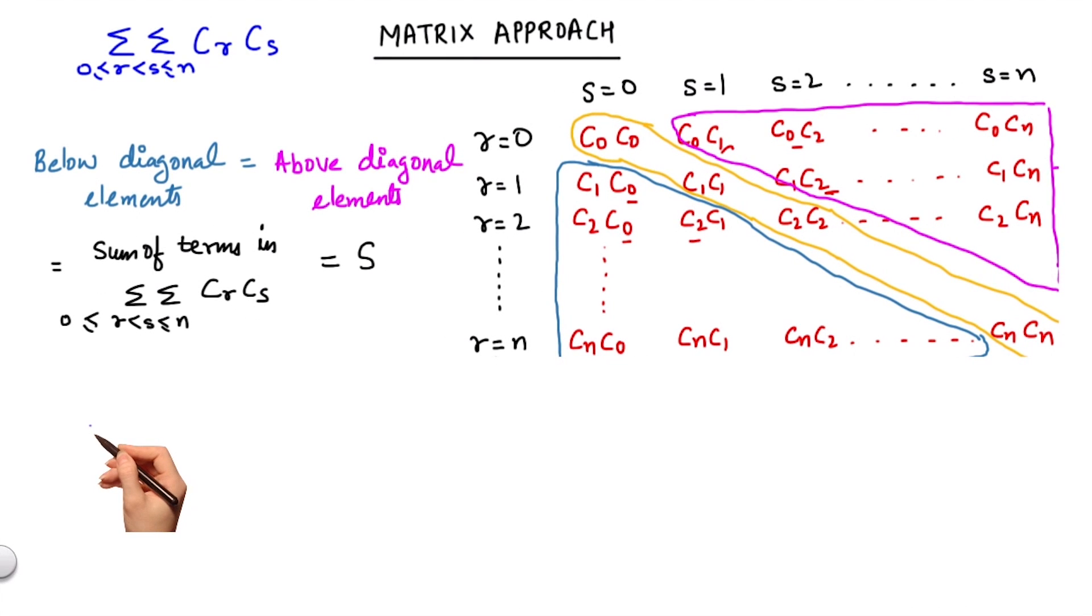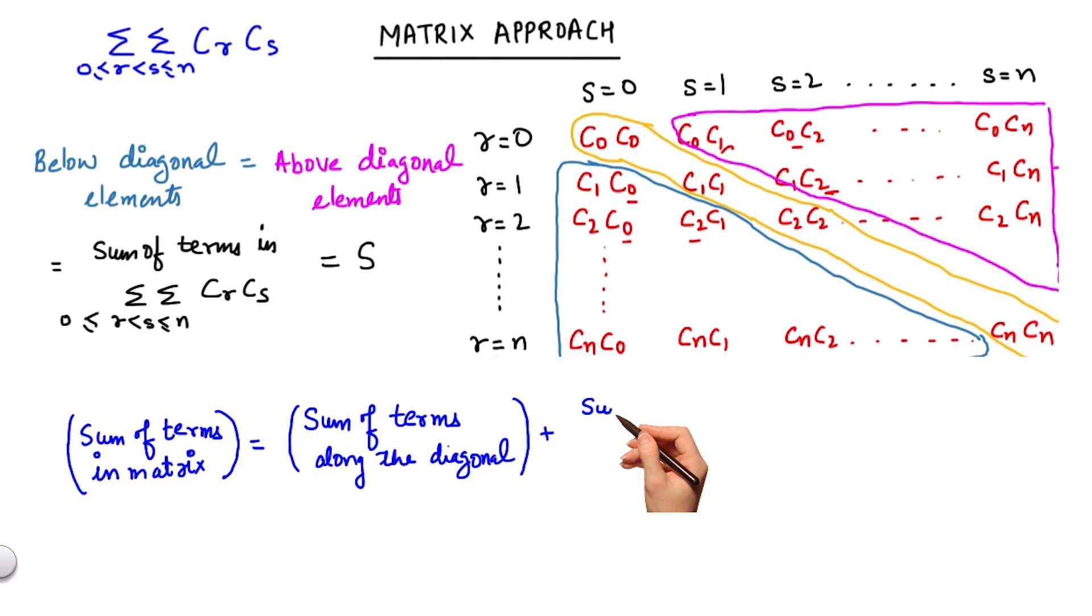Now we know that sum of all the terms in the matrix equals sum of the terms along the diagonal, plus sum of the terms below the diagonal, plus sum of the terms above the diagonal.